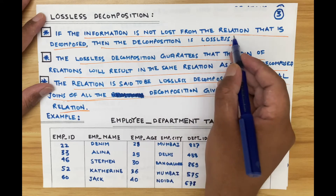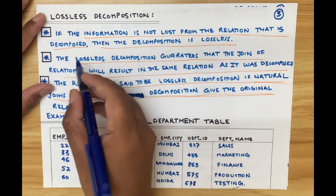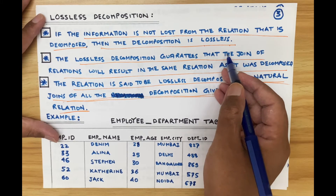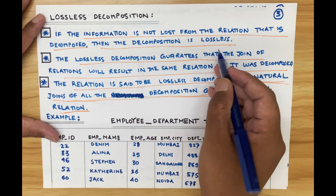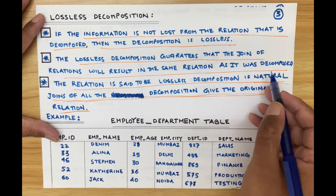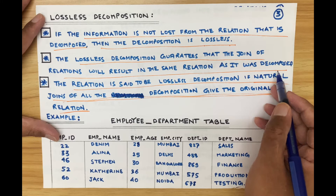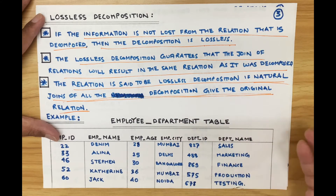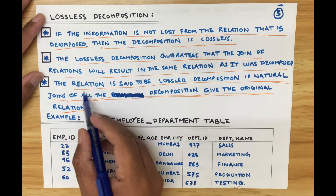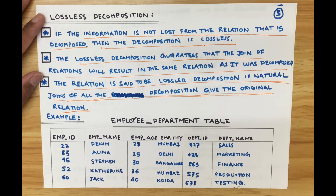Lossless decomposition — if information is not lost from the relation when you are dividing the table, then that decomposition is lossless. The lossless decomposition guarantees that the join of relations will result in the same relation as it was before decomposition. When you join the divided tables back together, you get the same information. A relation is said to have lossless decomposition if the natural join of all decomposed tables gives the original relation.